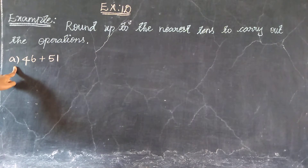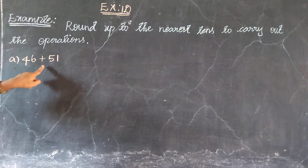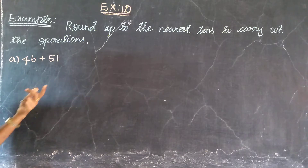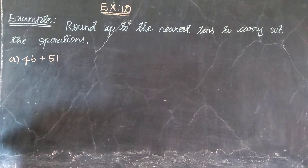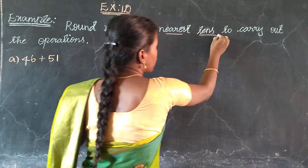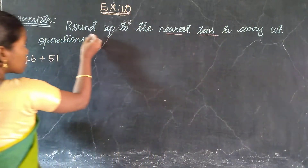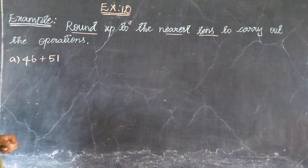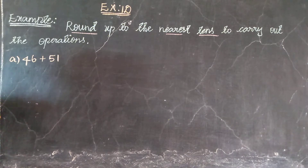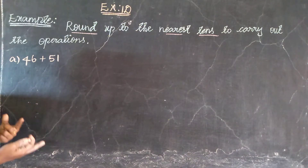So the example value is 46 plus 51. We could directly add these values, but instead we need to round up to the nearest tens place first. See how to round each value.